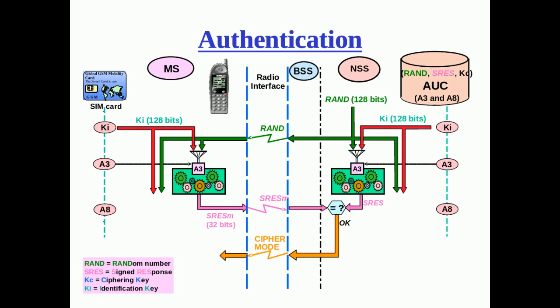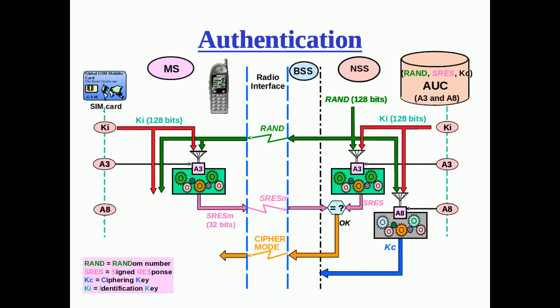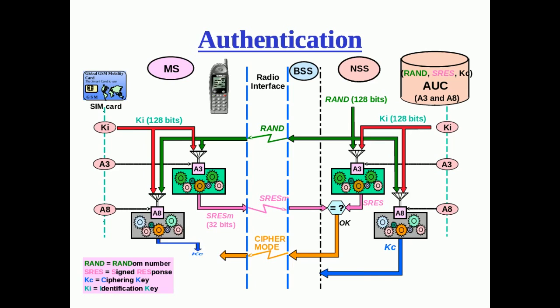SRES_M is sent back to the network where it is compared with the original SRES, and if they are the same then we proceed to the next step, which is to start the ciphering mode. For ciphering mode, the authentication center generates the ciphering key using the same inputs as A3 — Ki and the random number. Similarly on the mobile station side, the ciphering key is generated in the SIM using A8 algorithm with Ki and the random number as inputs.